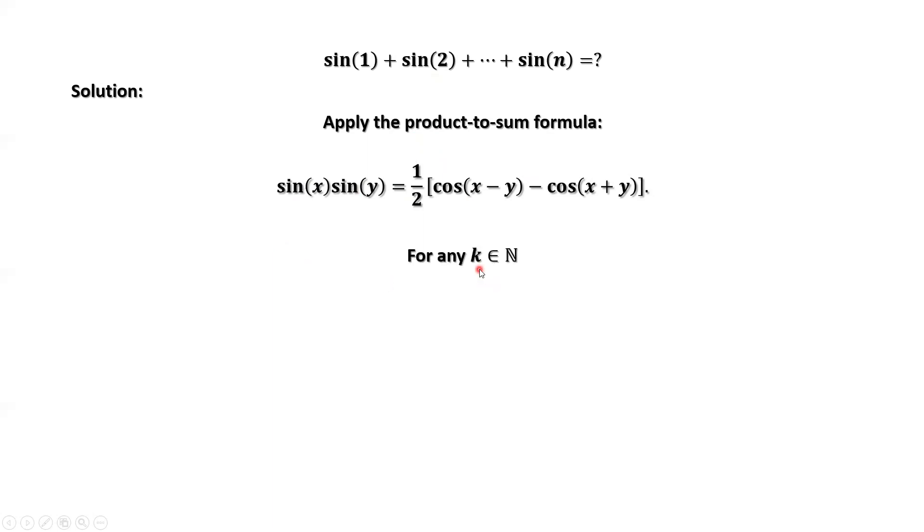For any k, k is a positive integer. Sine of k, we can put sine of one half next to sine of k, then divide by sine of one half to make the balance.